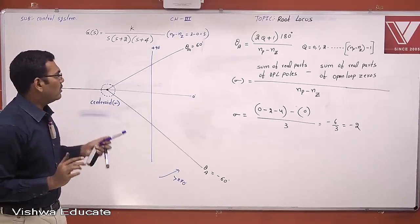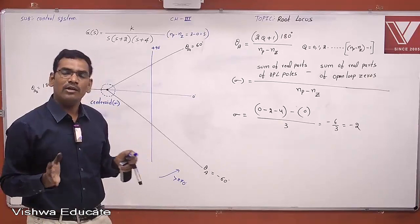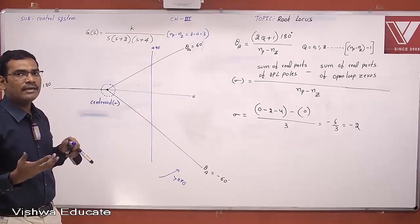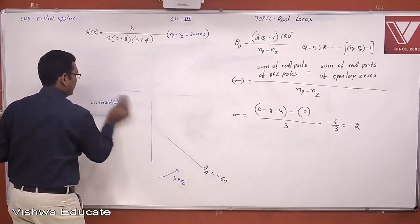With these rules — centroid and angle of asymptotes — you can draw the root locus diagram or verify whether a given option is correct. With these particular rules studied so far, we will now draw the root locus diagram for this problem.